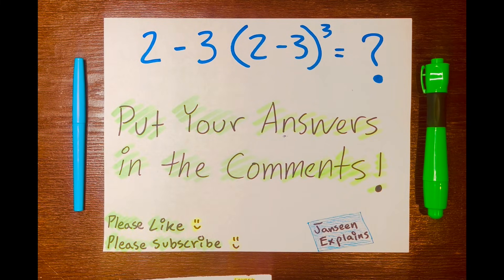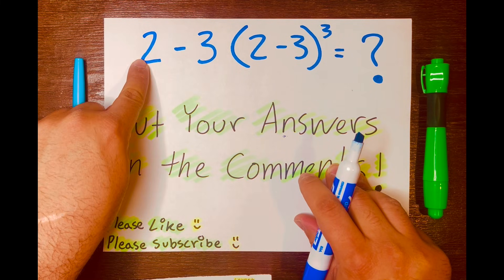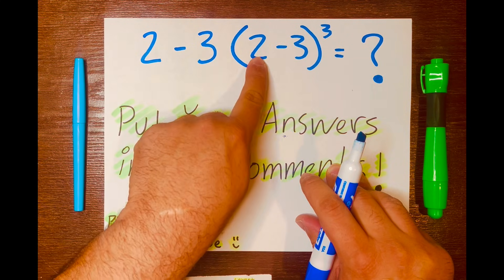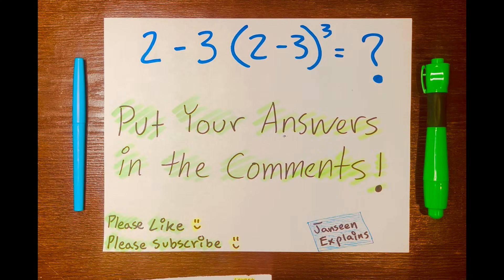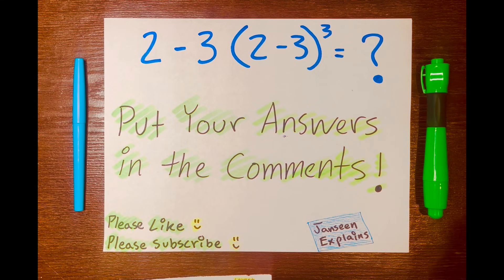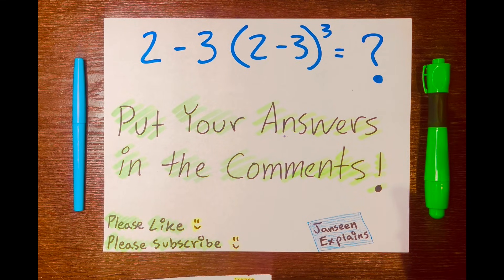Now go ahead and solve this math problem: 2 minus 2, and then you have 2 minus 3 inside these parentheses with an exponent of 3. Go ahead and put your answers in the comment section down below. Thank you for watching and I'll see you in the next video.